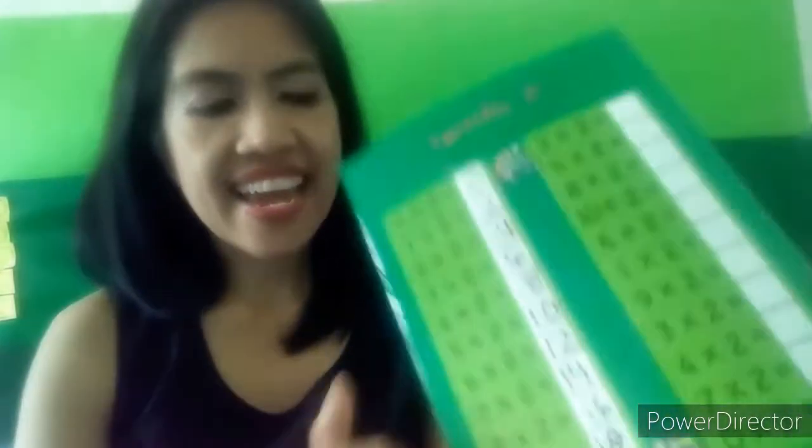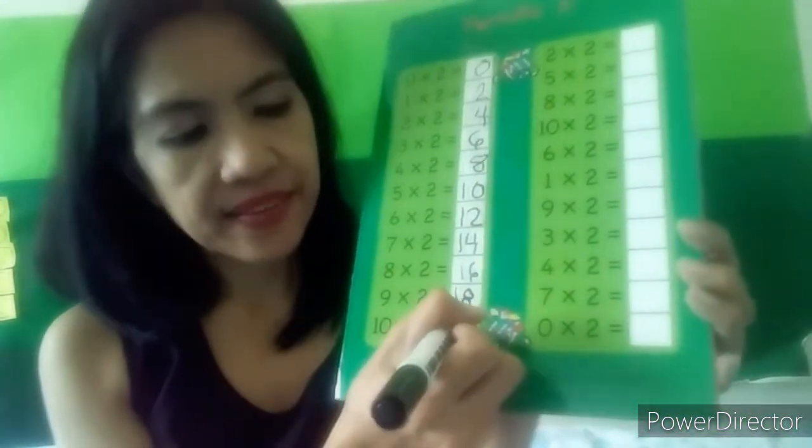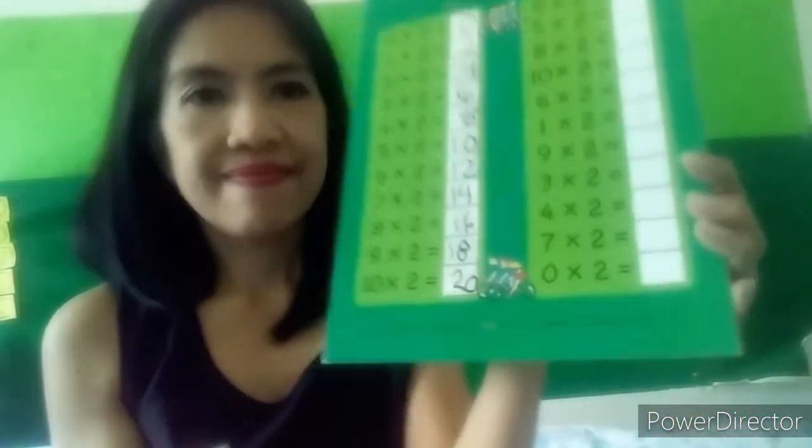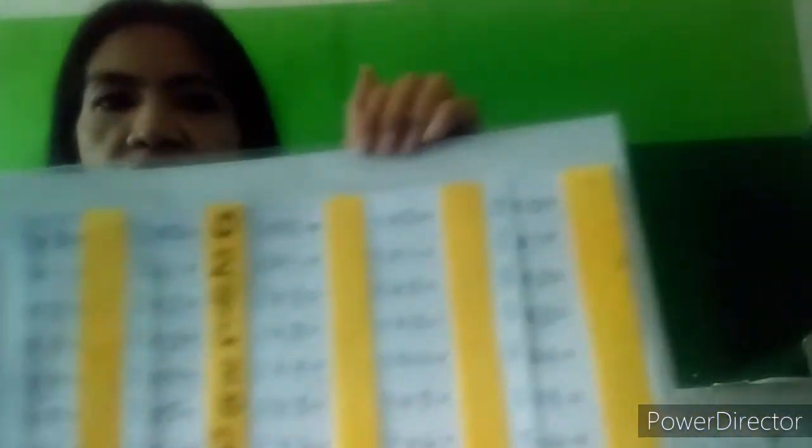Ten times two: let's repeat ten times — 2, 4, 6, 8, 10, 12, 14, 16, 18, 20 — so it's 20. It's much easier for them to memorize through singing. Let's go to our multiplication table by five.